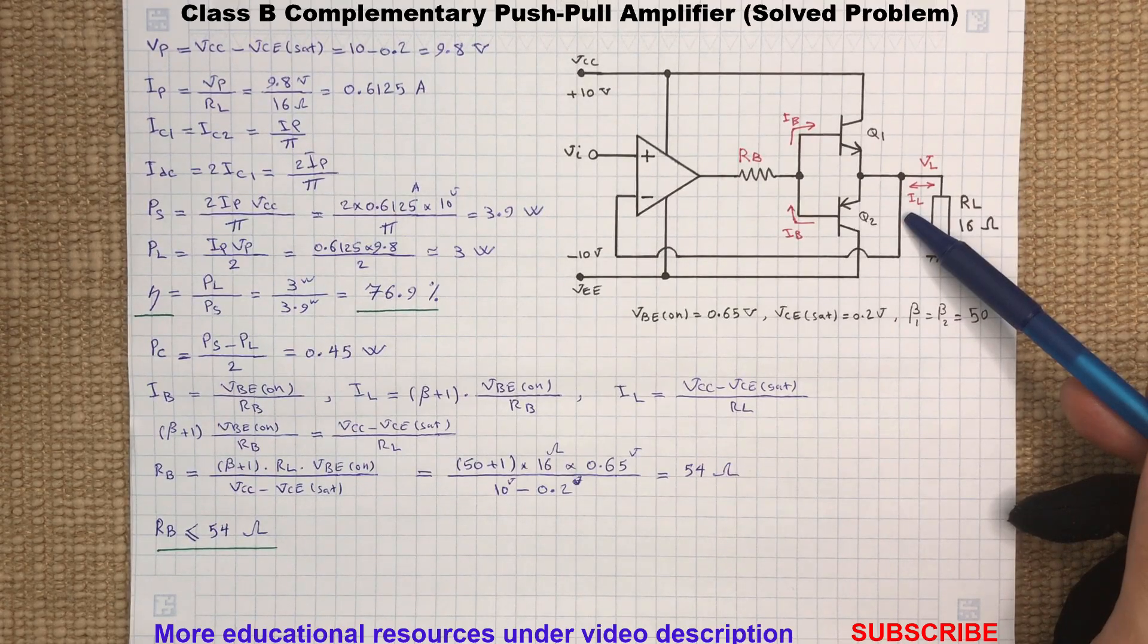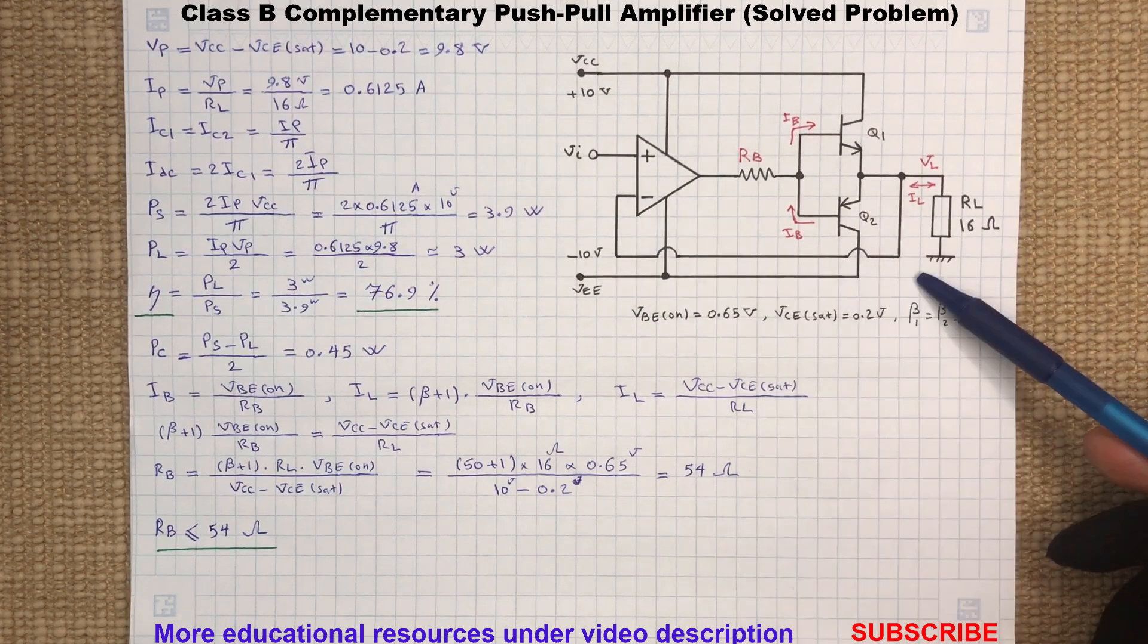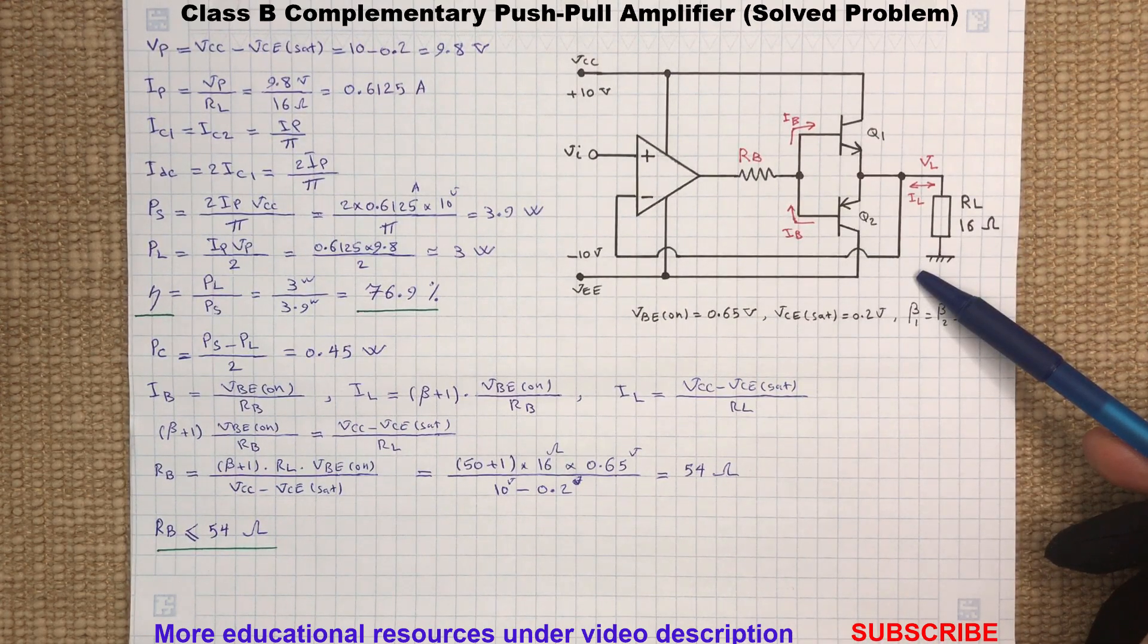In this circuit, because of the feedback from the output to the inverting terminal, the op-amp will operate as a voltage buffer with unity gain and will be responsible for driving the transistors Q1 and Q2.